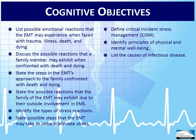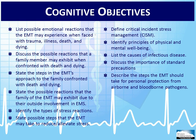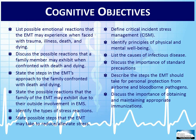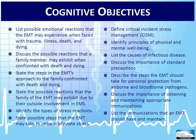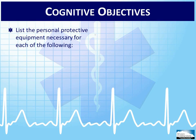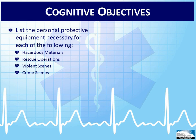Identify principles of physical and mental well-being. List the causes of infectious disease. Discuss the importance of standard precautions. Describe the steps the EMT should take for personal protection from airborne and bloodborne pathogens. Discuss the importance of obtaining and maintaining appropriate immunizations. List the immunizations that an EMT should have and maintain. List the personal protective equipment necessary for each of the following: hazardous materials, rescue operations, violent scenes, crime scenes, exposure to bloodborne pathogens, and exposure to airborne pathogens.